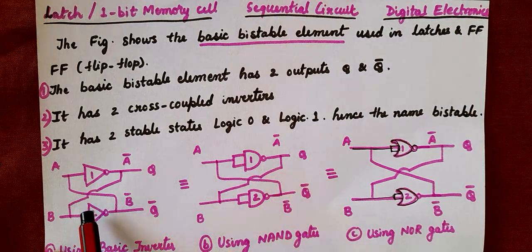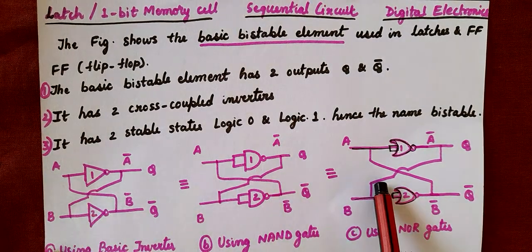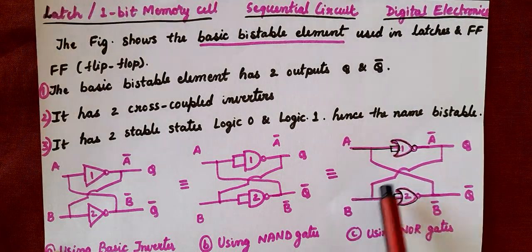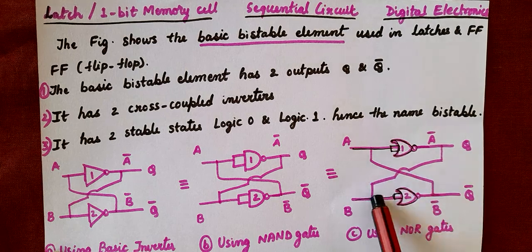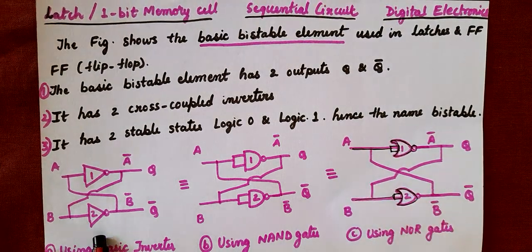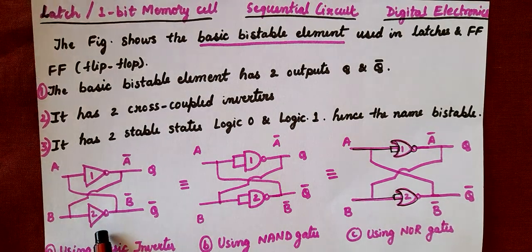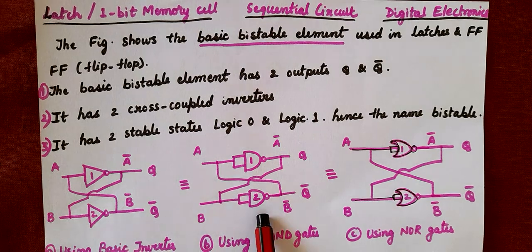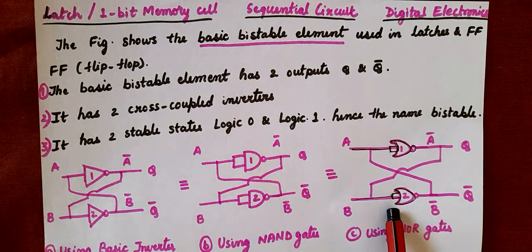We can also draw this cross-coupled NOT gate using a NOR gate. When we join both the inputs of the NOR gate and connect them to a single input, it forms a NOT gate. So this cross-coupled NOT gate is also a latch, and we can draw this NOT latch using either NAND or NOR.